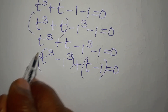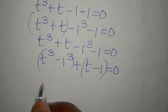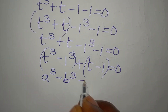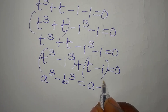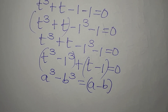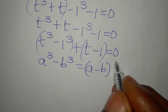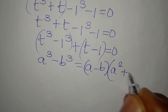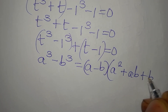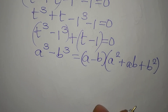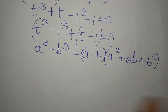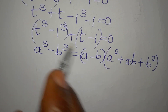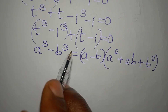Now I'll apply the difference of two cubes. If you recall, a cubed minus b cubed is the same as a minus b — just like we have for difference of two squares — then we have a squared plus ab plus b squared. So t and 1 are representing a and b here.